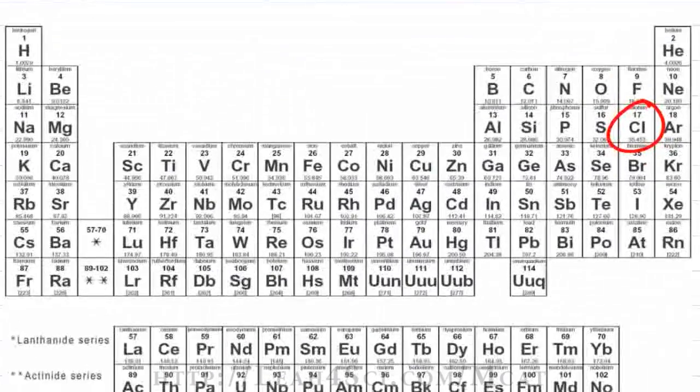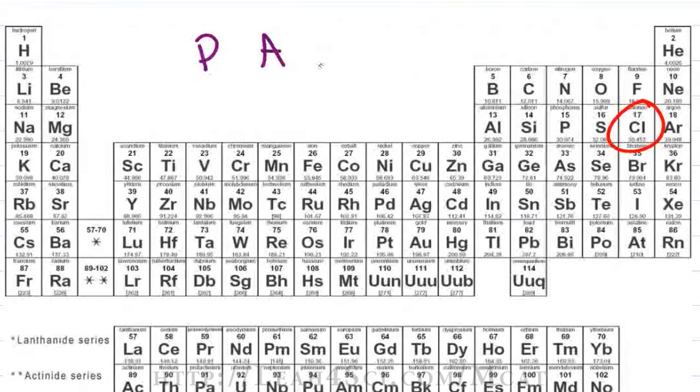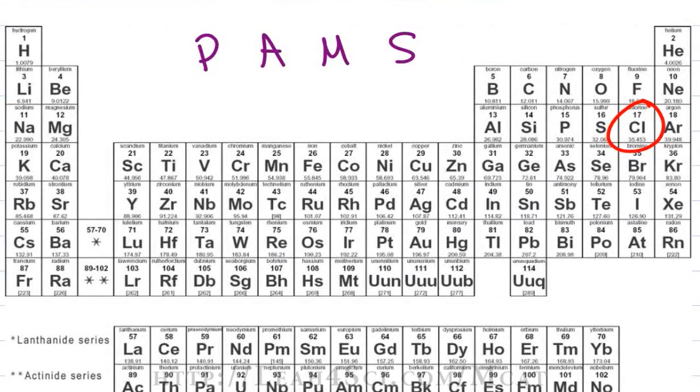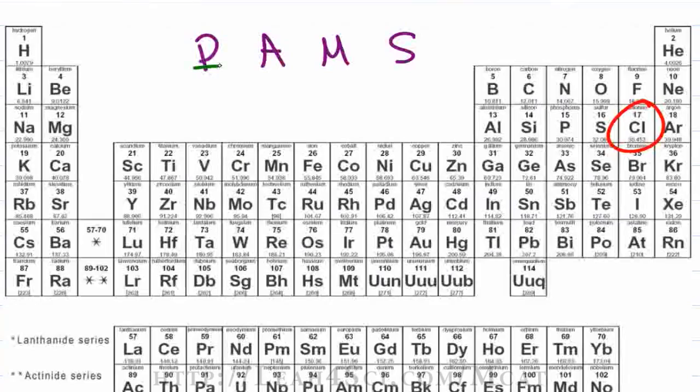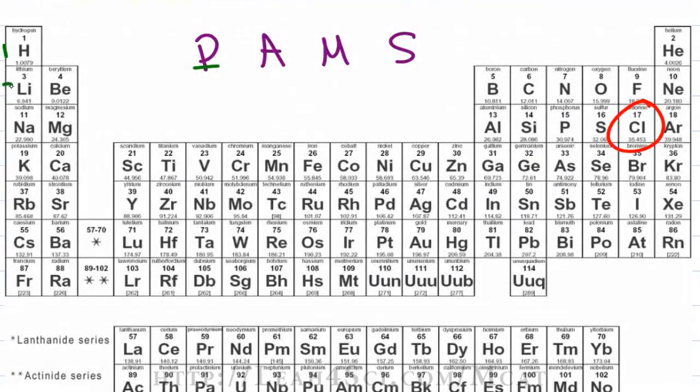So now let's relate this back to the atom. The four quantum numbers that you have to know can be memorized by the mnemonic PAMS. We have principal energy level, which is N, and that will be 1, 2, 3, 4, 5, 6, and 7. We have the azimuthal, which refers to the orbital, and that will be S, P, D, and F.